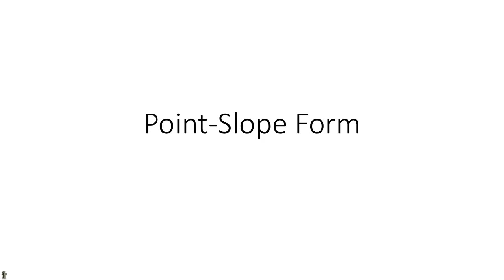We're going to talk about the point-slope form of a linear function, which is a form that we use as a starting point or kind of a stepping stone to get to the slope-intercept form.